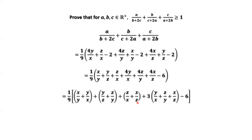Why are we doing this? Originally we only have 4Y over X. We put 1 here and save 3 here. Similarly, for Y over Z we have 1 Y over Z and 3 Y over Z. And also for X over Z.